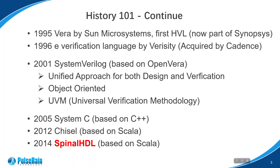Back to the history lesson. After VHDL and Verilog appeared in the 1980s, the size of designs got bigger and bigger, and their weakness on verification became prominent. So in the 1990s, HVL — hardware verification language — was introduced. The first HVL was Vera by Sun Microsystems in 1995, followed by the E language in 1996. Vera later turned into OpenVera, which became the foundation of SystemVerilog.